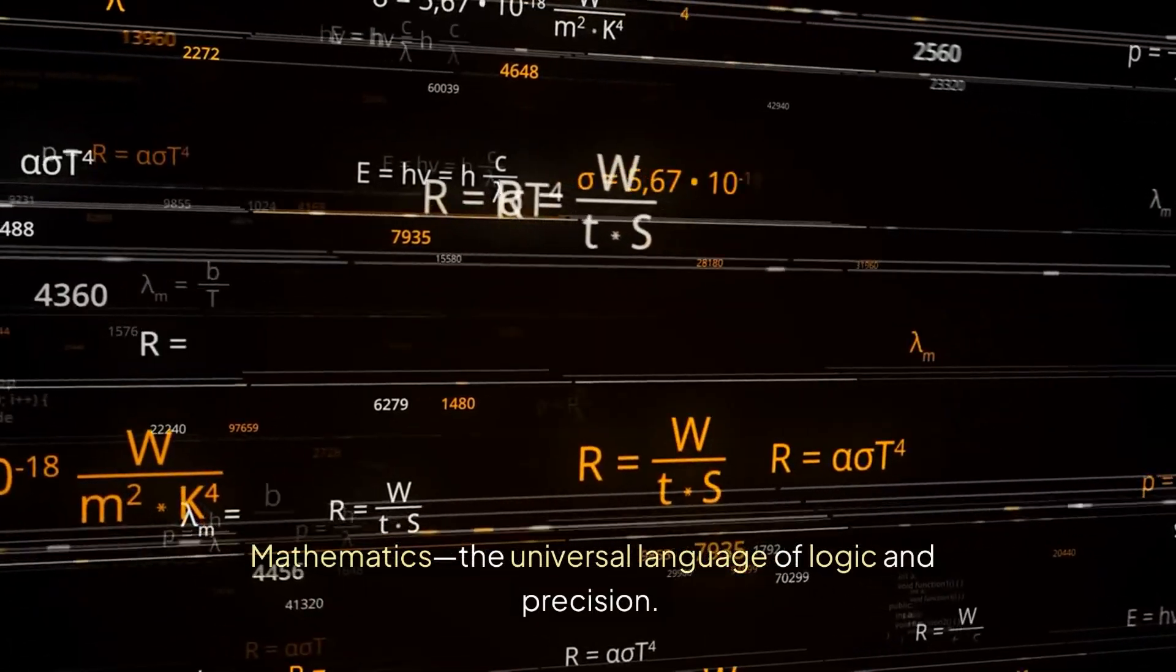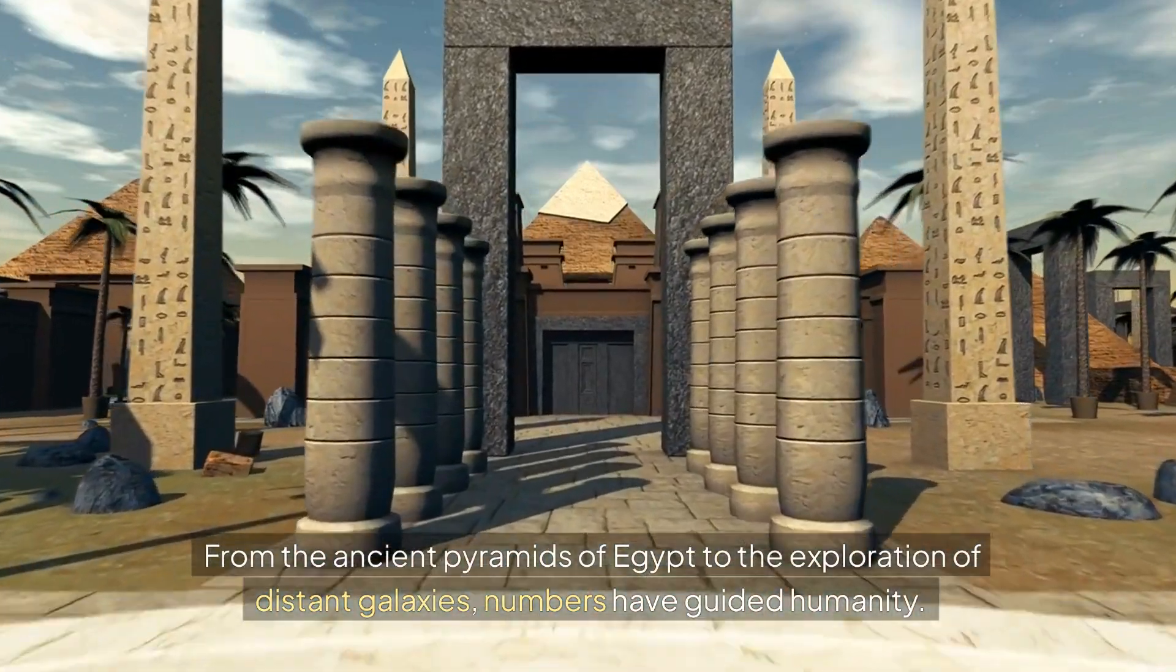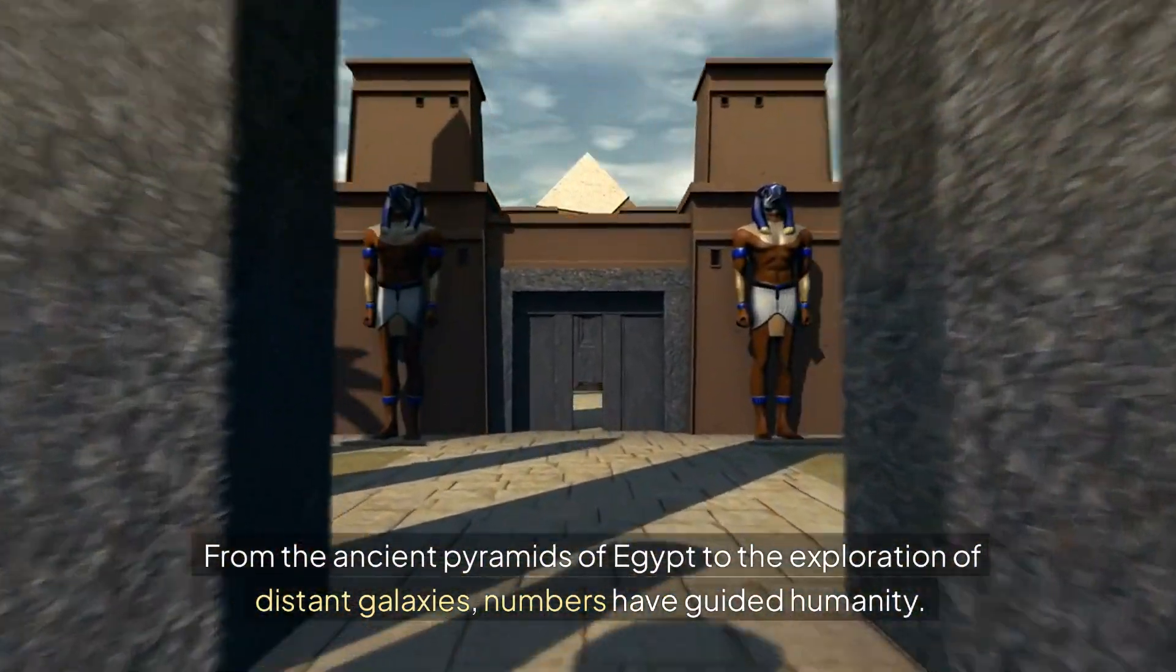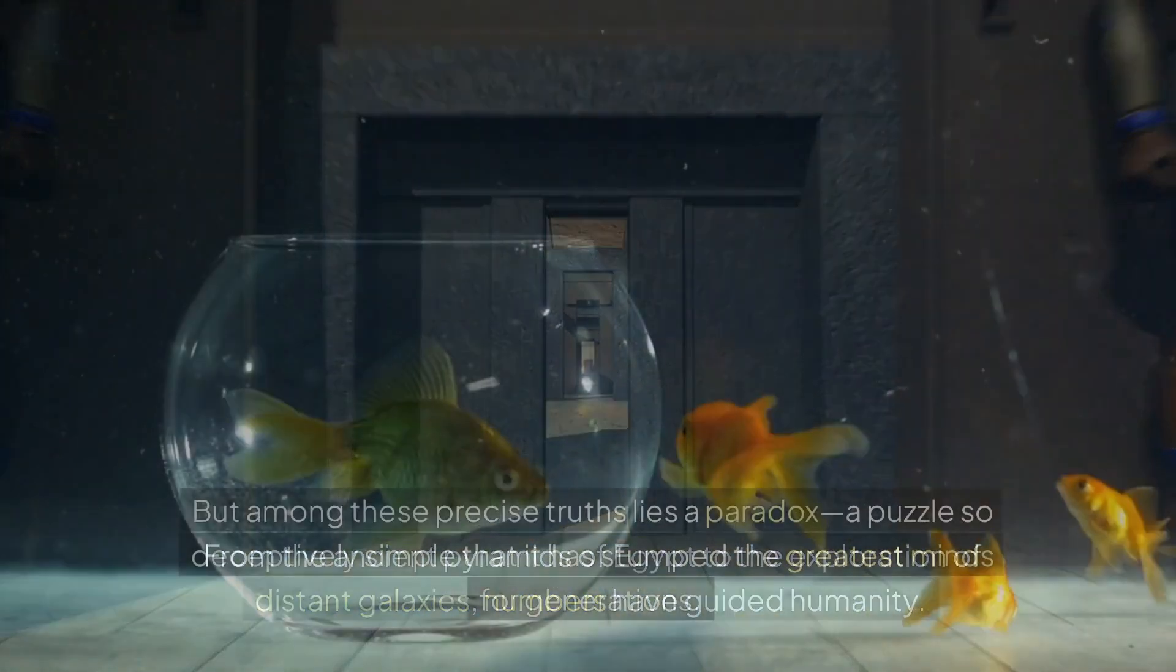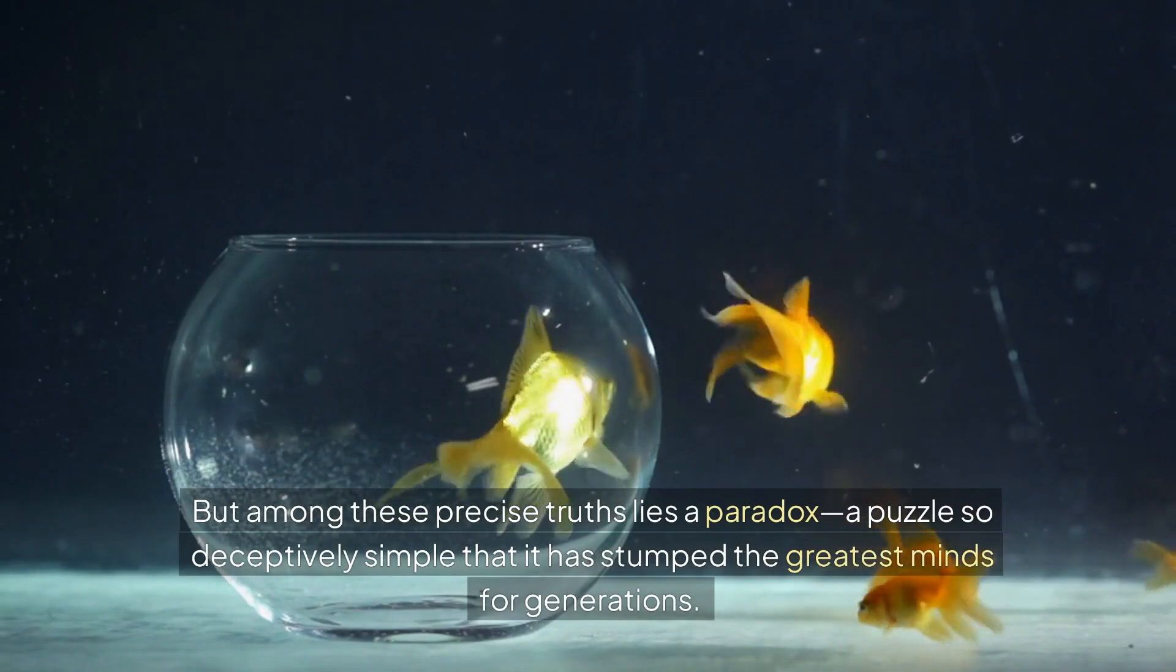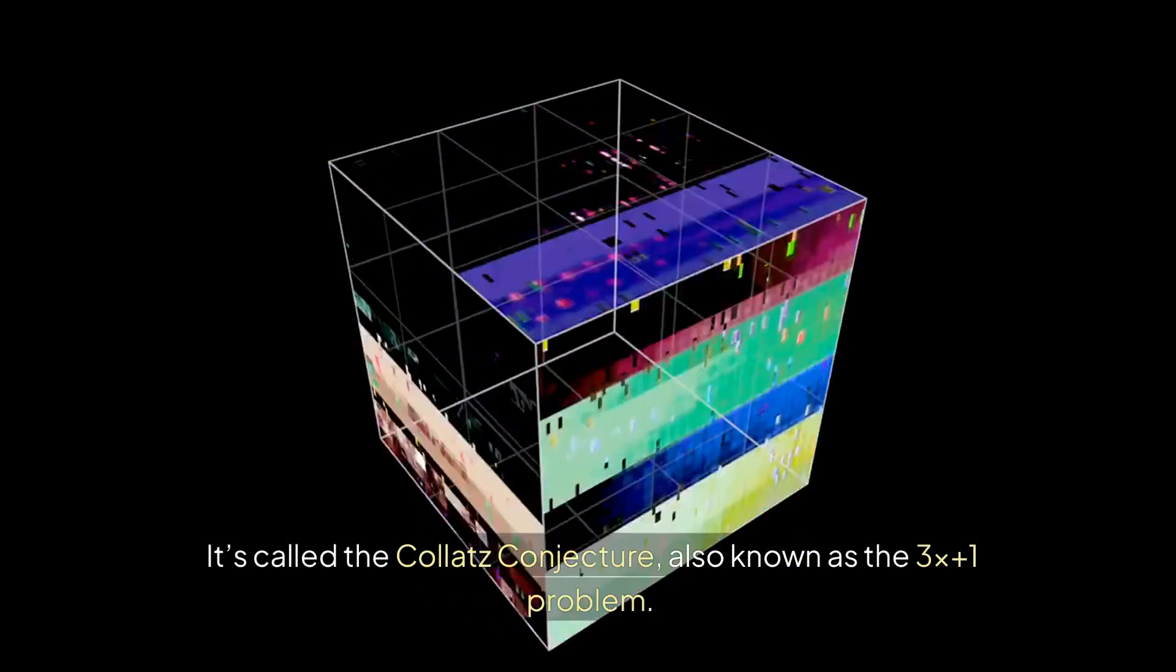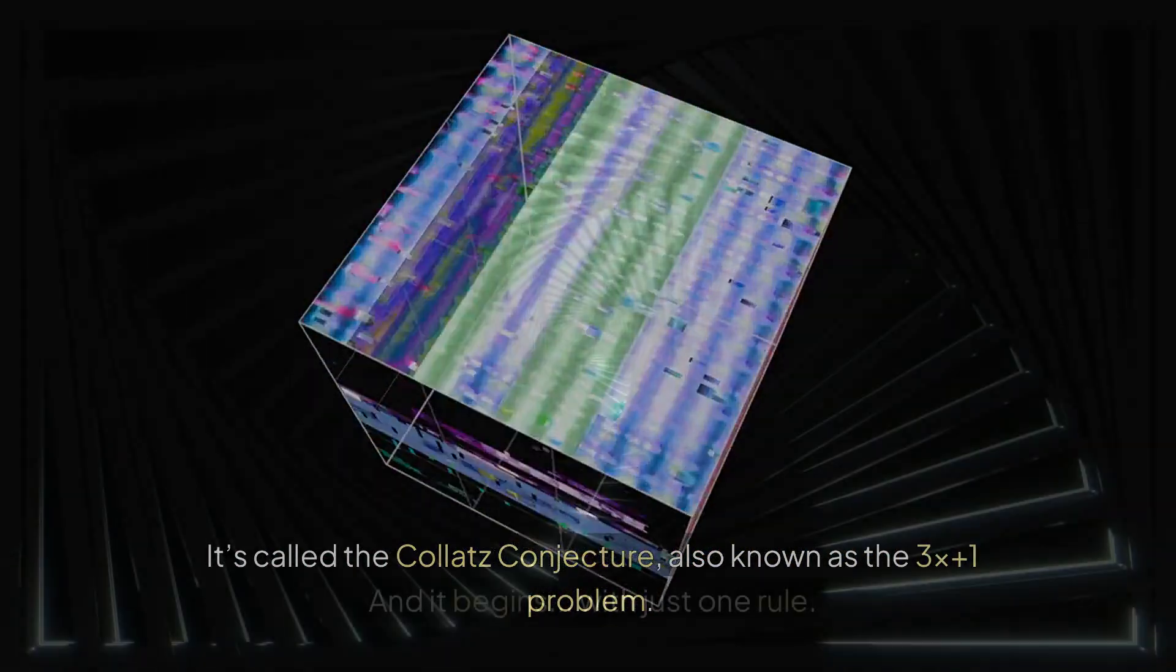Mathematics, the universal language of logic and precision. From the ancient pyramids of Egypt to the exploration of distant galaxies, numbers have guided humanity. But among these precise truths lies a paradox—a puzzle so deceptively simple that it has stumped the greatest minds for generations. It's called the Collatz Conjecture, also known as the 3x+1 problem.